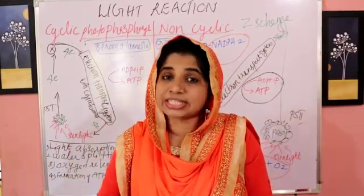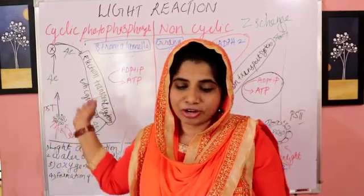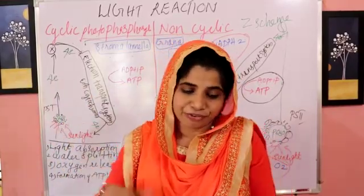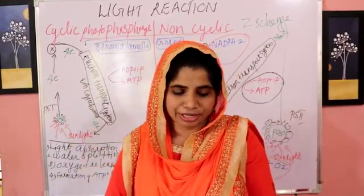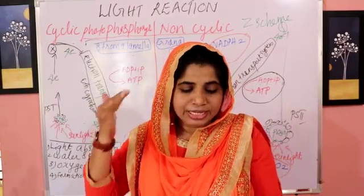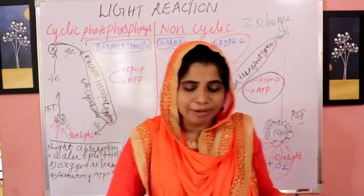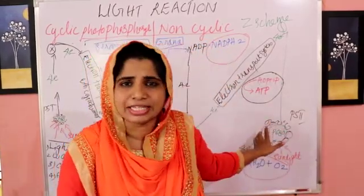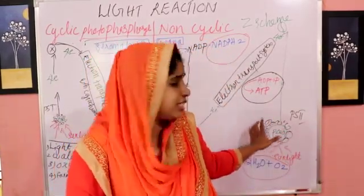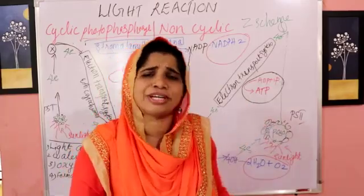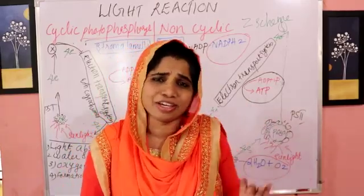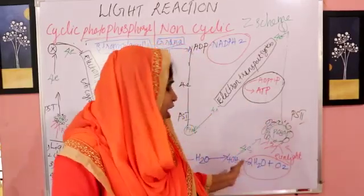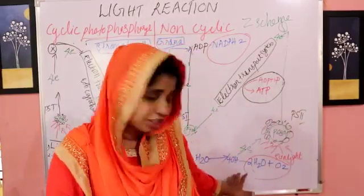The difference between cyclic and non-cyclic: the Z scheme. These are the key peculiarities. Water splitting occurs in non-cyclic. It is very easy — just remember the two photosystems.